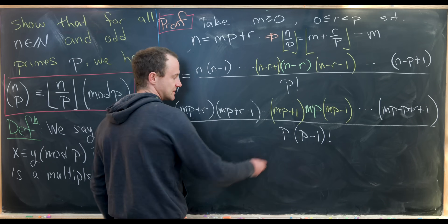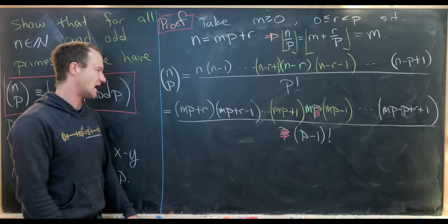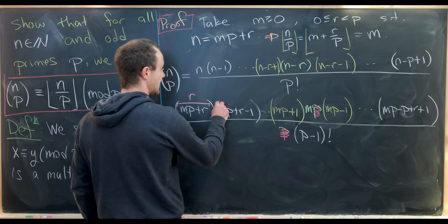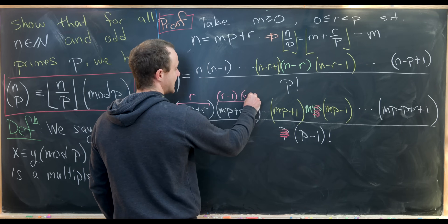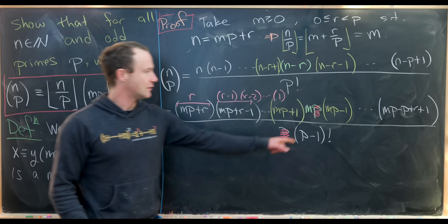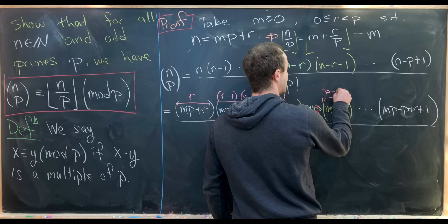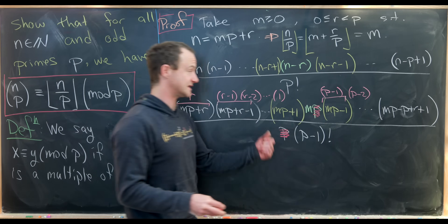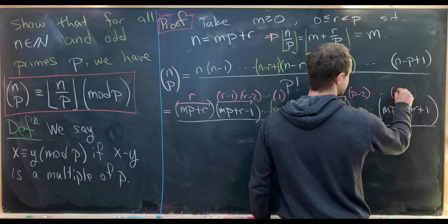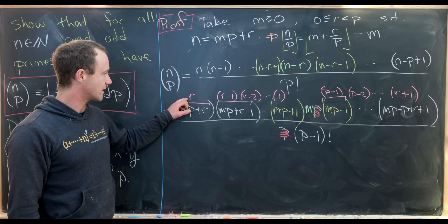We note that we definitely hit the n minus r term because r is between 0 and p and there are p terms in the numerator. Now we simplify: the factor p in the denominator cancels the mp term. Reducing the remaining numerator terms mod p: mp plus r becomes r, the next term r minus 1, then r minus 2 down to 1. Then mp minus 1 reduces to negative 1, which is p minus 1 mod p, followed by p minus 2, down to r plus 1.